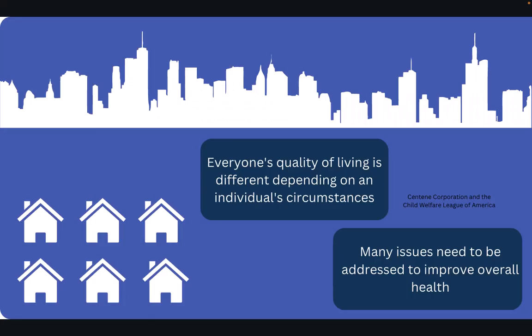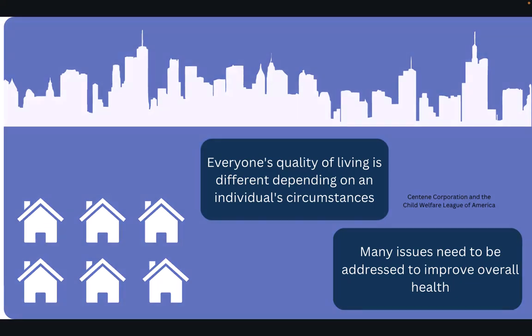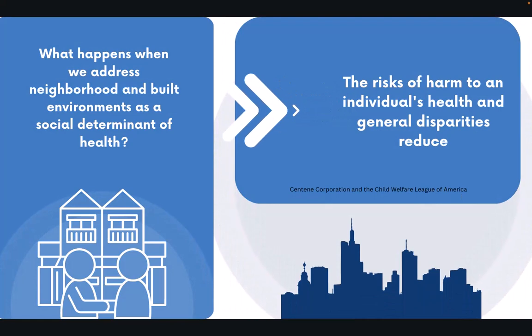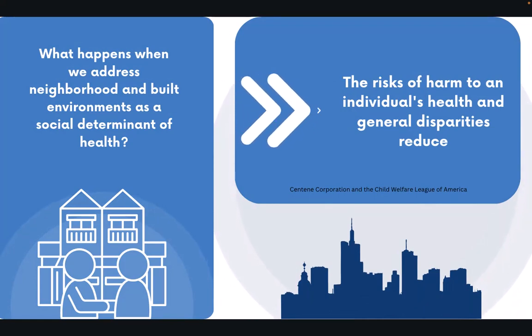Housing conditions also impact a person's health and must be addressed to improve chances of maintaining a healthier lifestyle. When we think about our homes and well-being, we may forget that not everyone has the same quality of living environment. There is a need to address air quality, such as safety from the dangers of molds and asbestos.